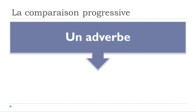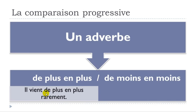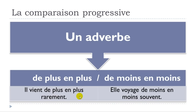With an adverb, it's exactly the same structure — 'de plus en plus' or 'de moins en moins.' For example: 'il vient de plus en plus rarement' and 'elle voyage de moins en moins souvent.' Normally the adverb follows the verb; you simply insert 'de plus en plus' or 'de moins en moins' before the adverb.